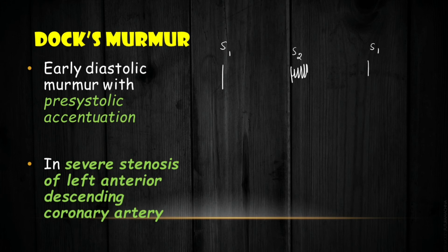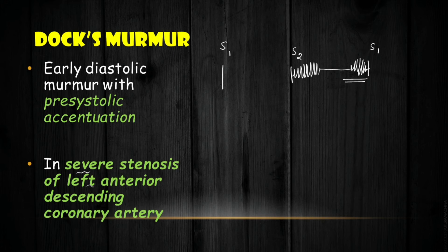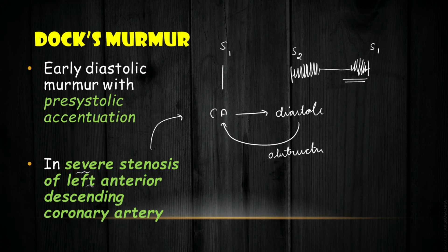Dock's murmur is an early diastolic murmur associated with pre-systolic accentuation. It is mainly due to severe stenosis of the left anterior descending (LAD) coronary artery. The reason it is a diastolic murmur is that coronary arteries mainly supply the heart during diastole, so any obstruction in the coronary artery produces a murmur mainly during the diastolic phase.